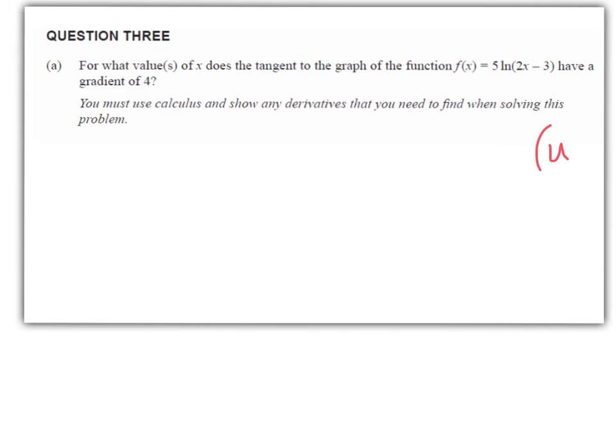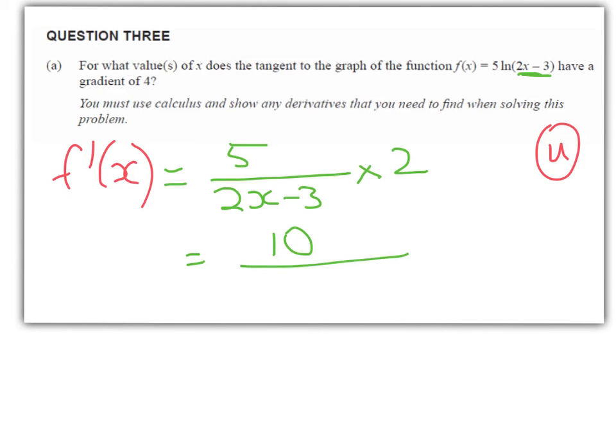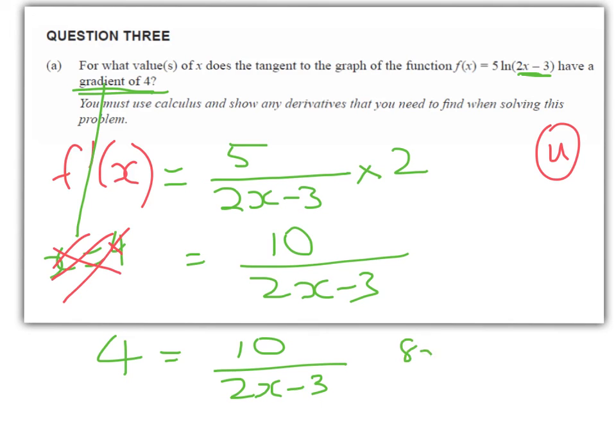Next one, back to an achieved question. We're looking for what value of x does the tangent have a gradient of four, so we'll find the derivative function. Switch to green, so five chain ruling 5/(2x - 3) times the derivative of the inside function which is two, so we've got 10/(2x - 3). And the next thing we need to do here is to figure out when is the gradient four. Be careful here, it's not x equals four. What it is is saying where is the gradient four, so we're solving f'(x) = 4. Cross multiplying we get 8x - 12 = 10, 8x = 22, and we get x is equal to 11/4 which is 2¾ or for you guys who like decimals it's 2.75 which is fine.